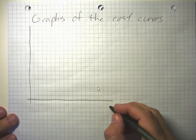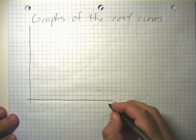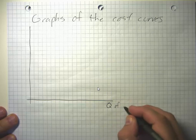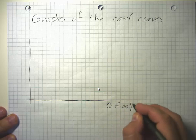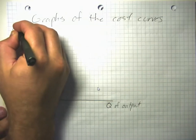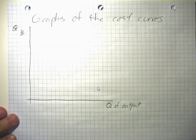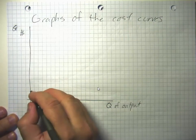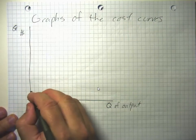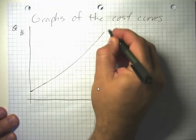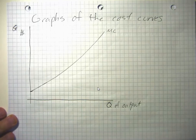We're going to build a graph with quantity of output on the horizontal axis and cost or prices on the vertical axis. We're going to start with our marginal cost being relatively low, and it's going to increase over time because we have diminishing returns to the variable inputs.